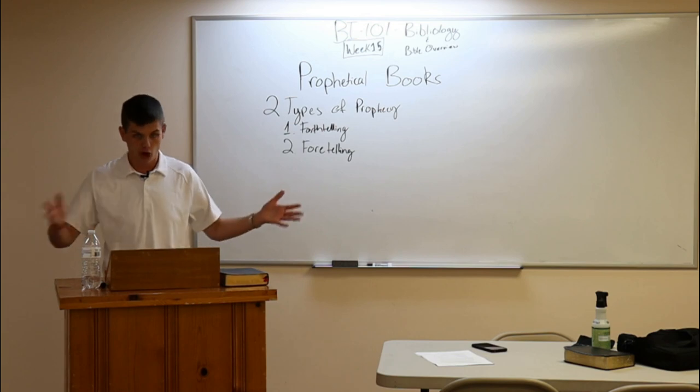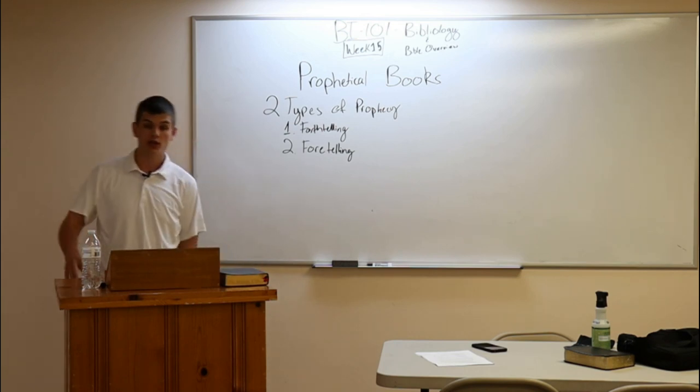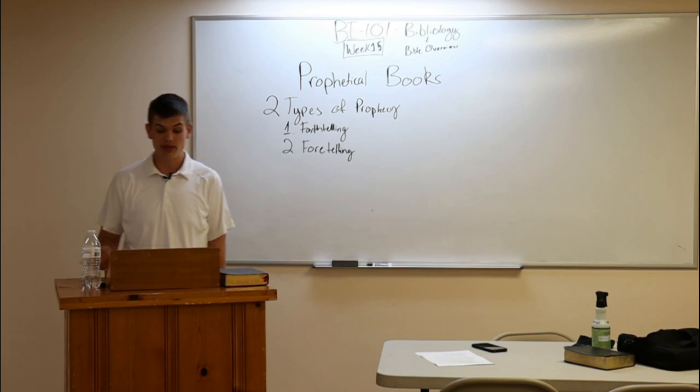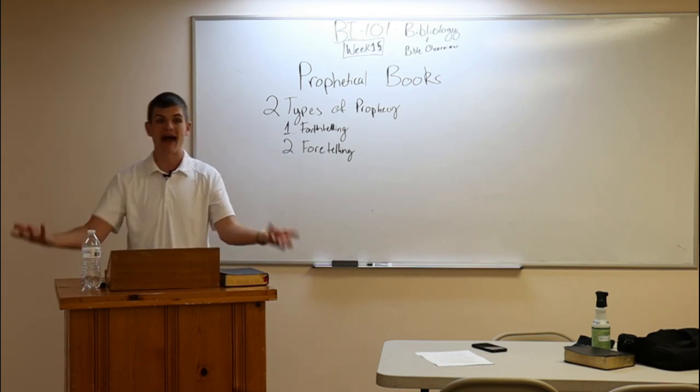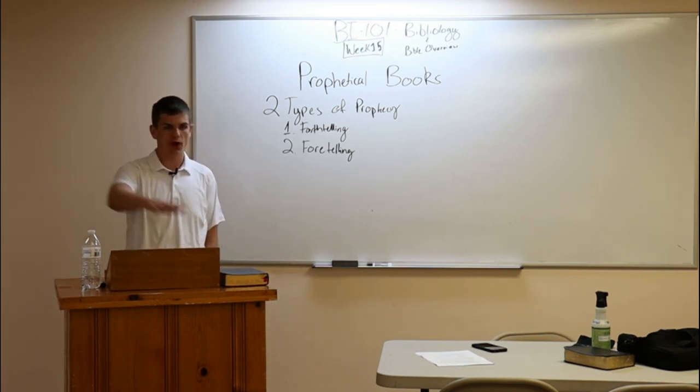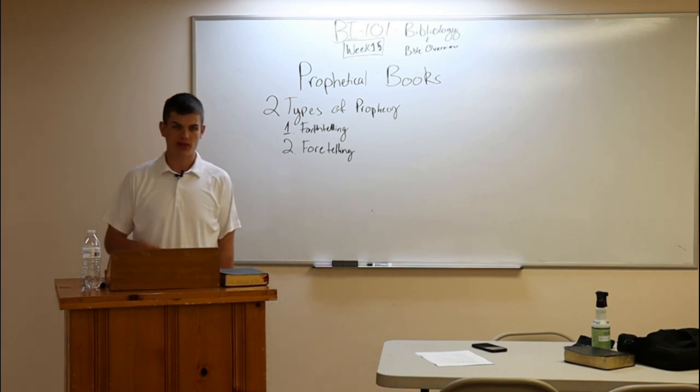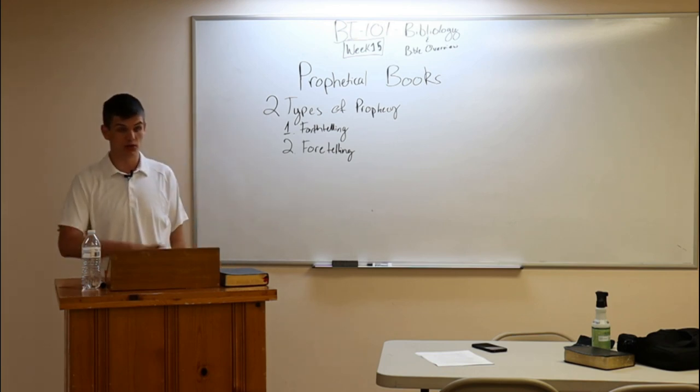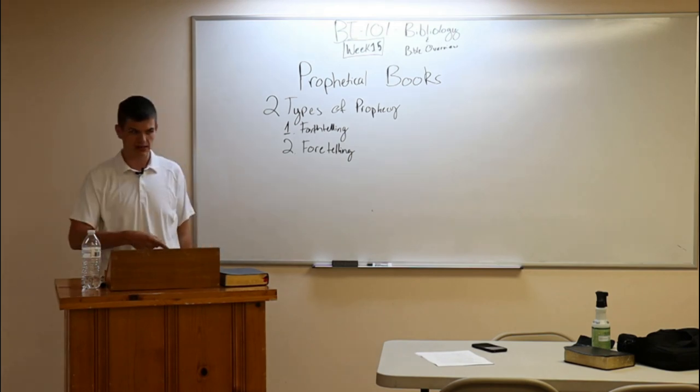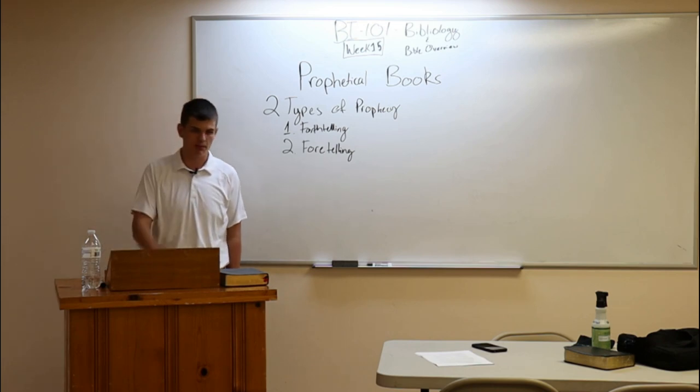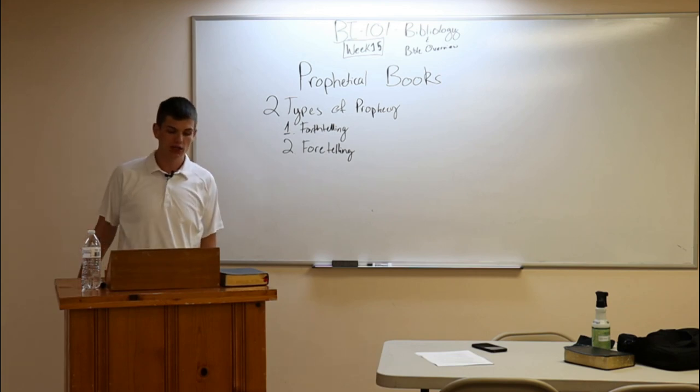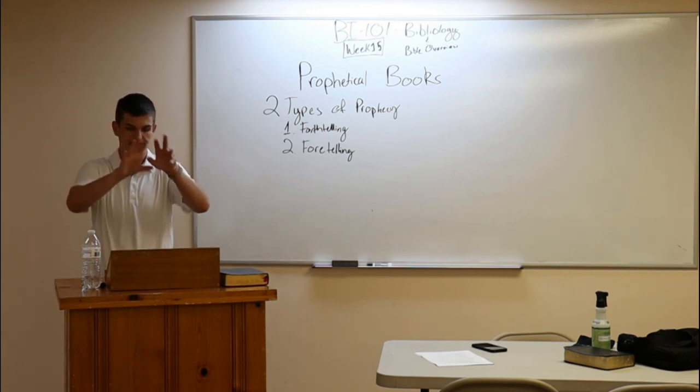Then you have one book in the Hebrew Bible, it's 12 books in ours, and in the Hebrew Bible it's just known as the 12. That makes up the minor prophets, all of the books from Hosea to Malachi. But then the other way of dividing them up is their ministries in relation to the exiles. You'll hear people talk about the pre-exilic prophets or the post-exilic prophets. And there's a couple prophets that began their ministries pre-exile and continued it into the exile.